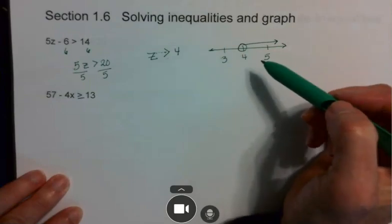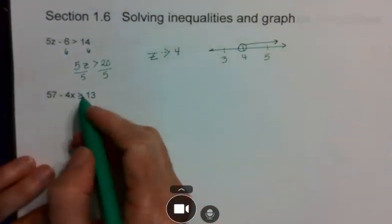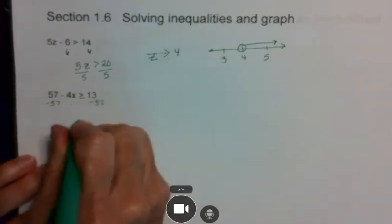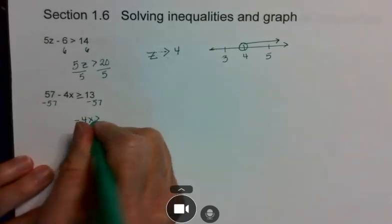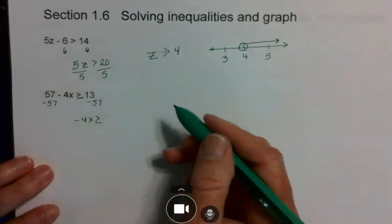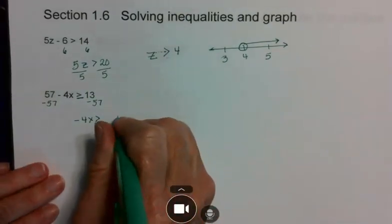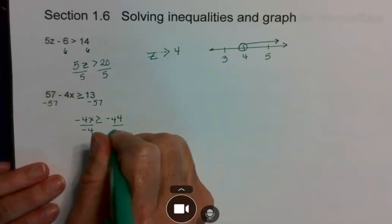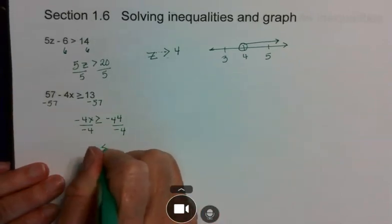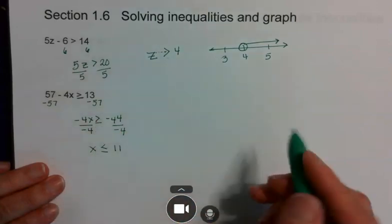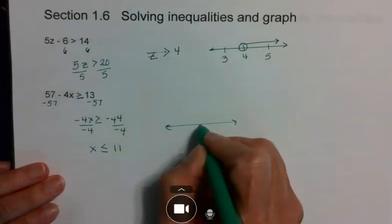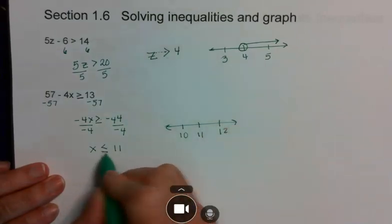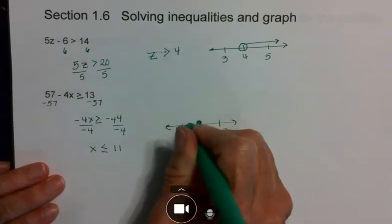Over here, this one I'm going to subtract 57 from both sides, so I have negative 4x is greater than or equal to negative 44. When I divide, notice I am dividing by a negative number, which means I must switch the direction of my inequality. When I graph this one, 11, 10, 12, there's a line underneath it so it's a closed circle, and it goes in that direction.